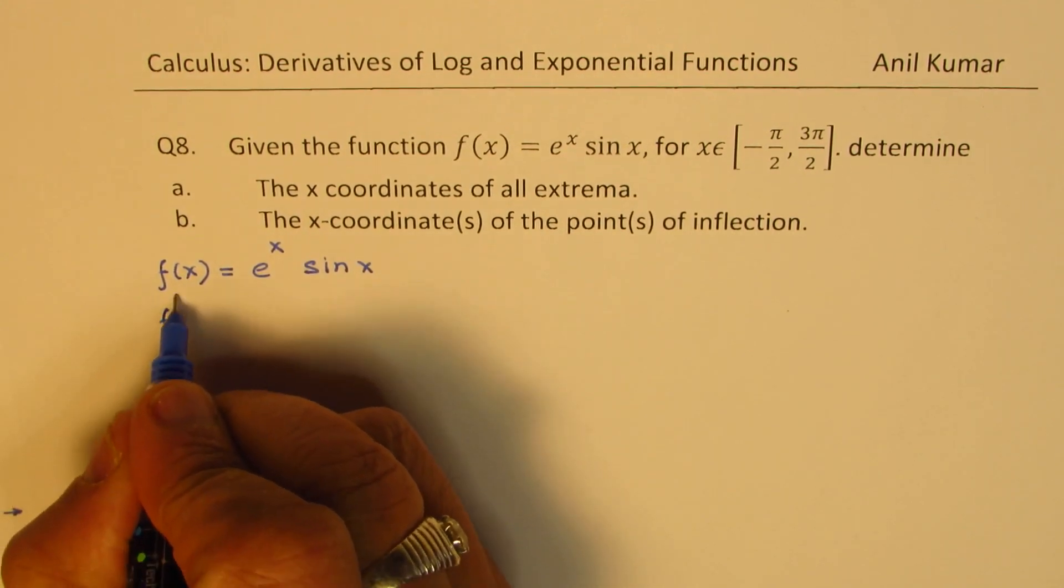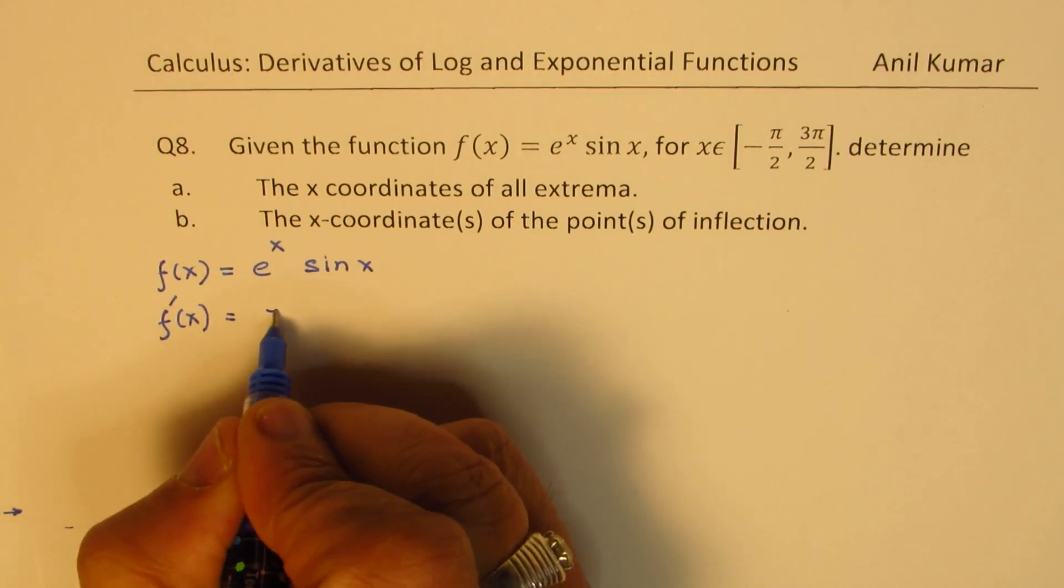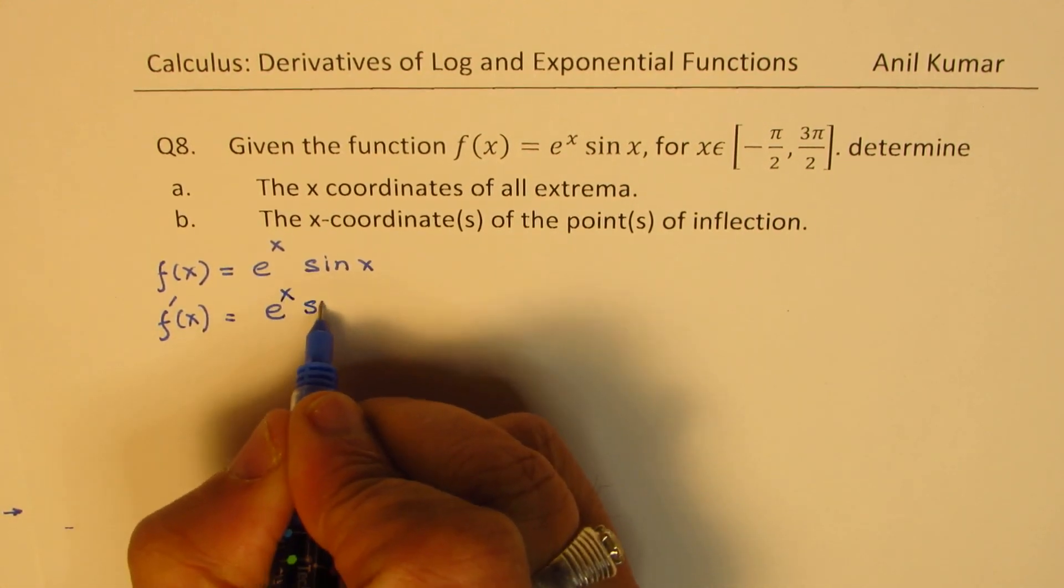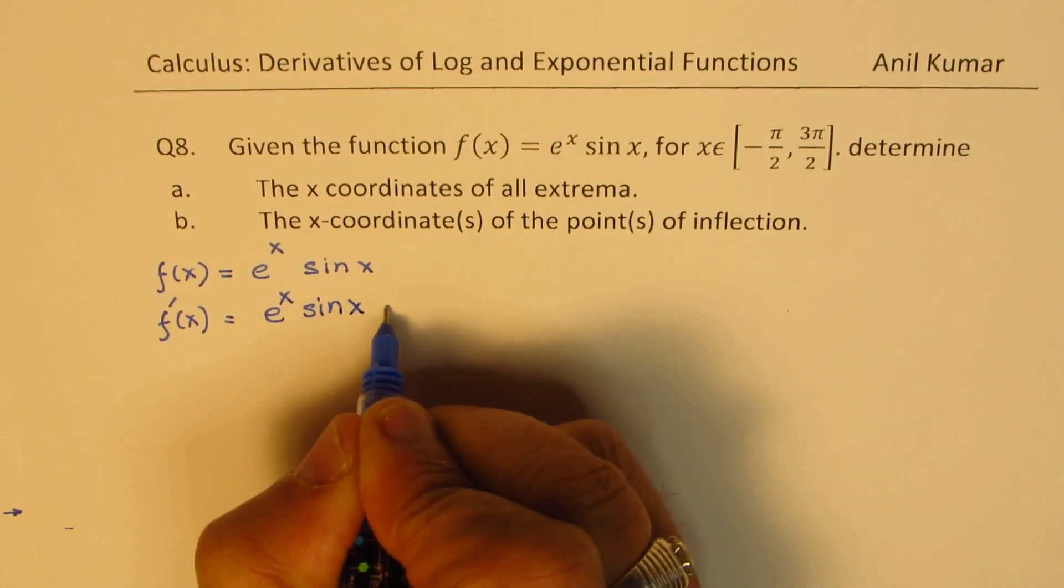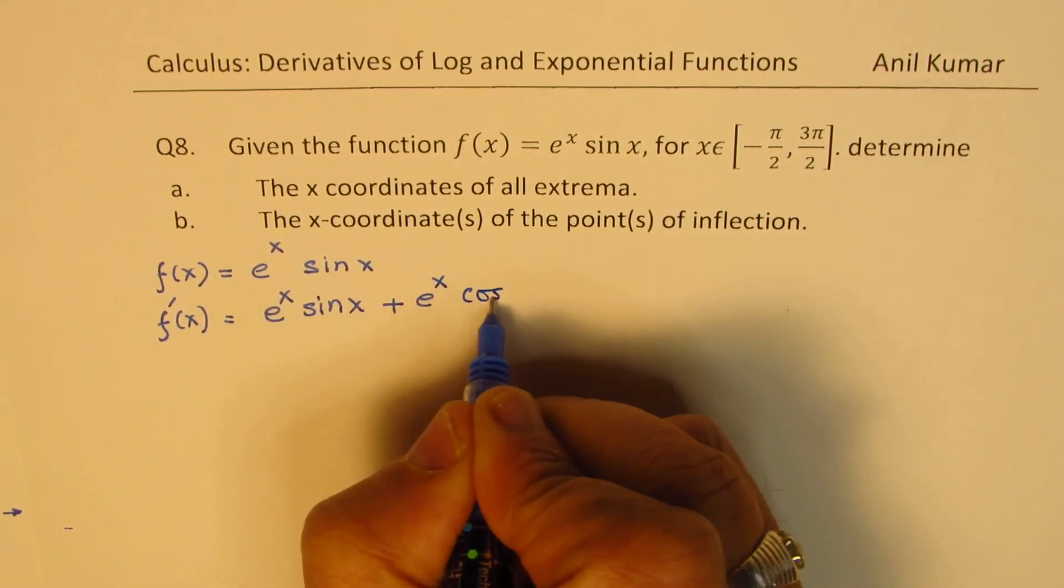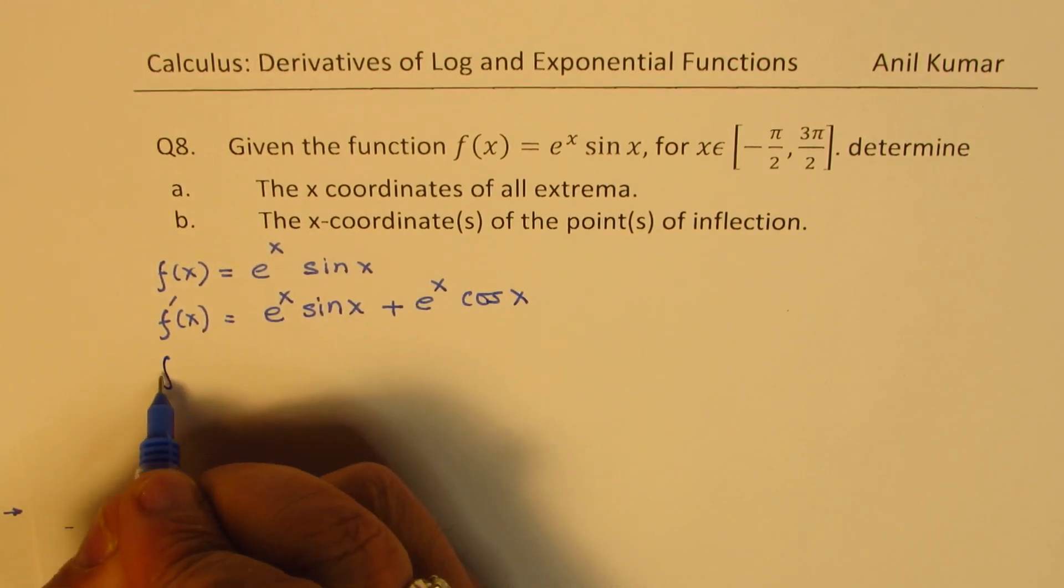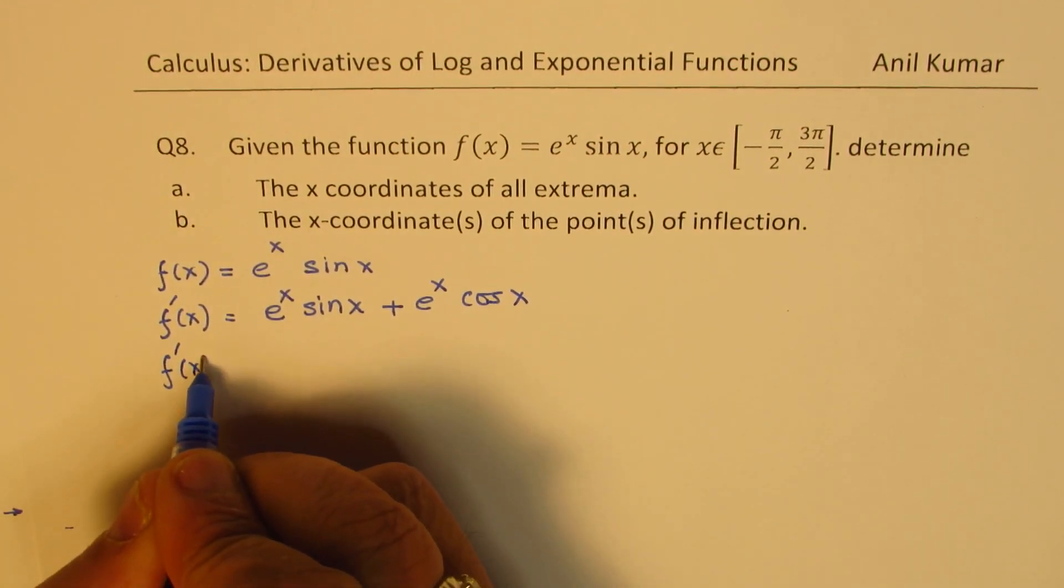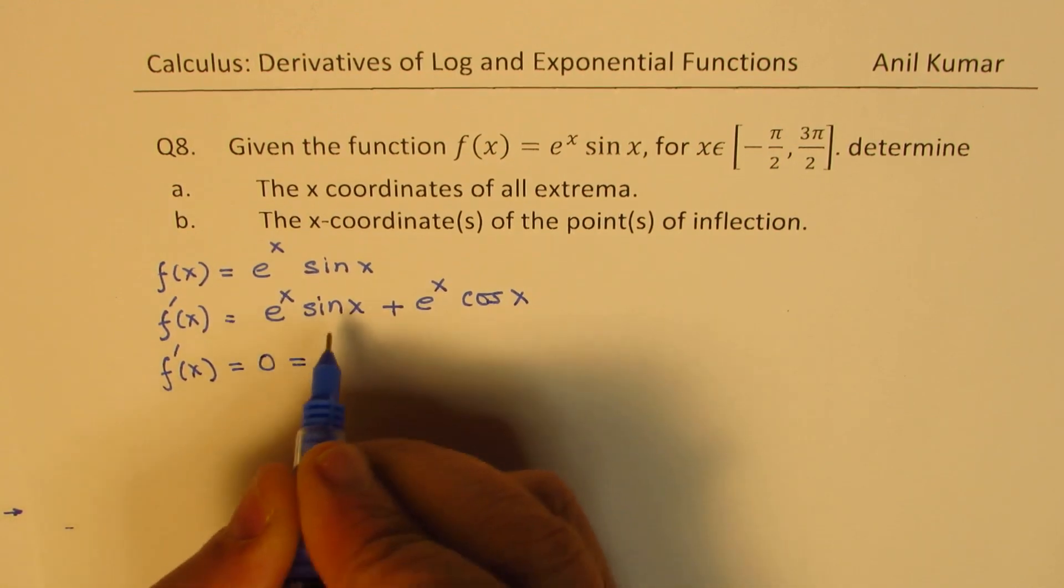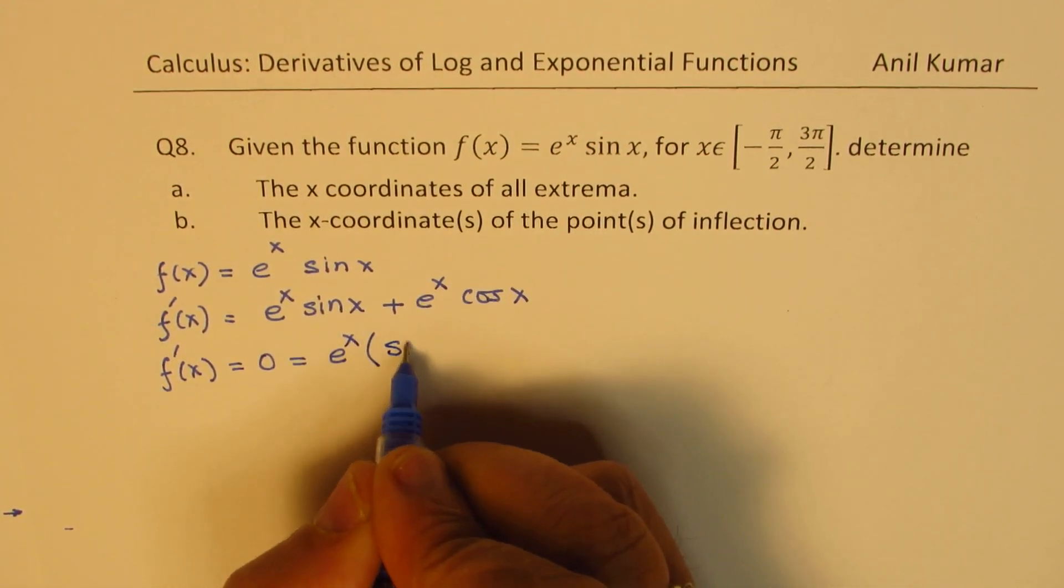So derivative will be product rule. We get e to the power of x sin(x) plus e to the power of x, derivative will be cos(x). For critical number this should be equal to 0, and that is we'll take e to the power of x common and we have sin(x) plus cos(x).